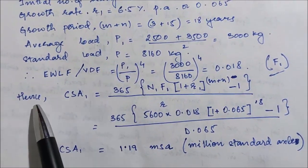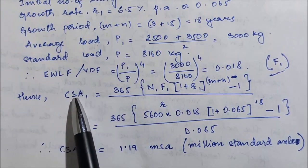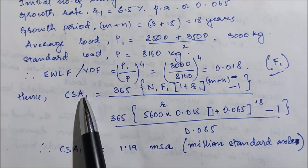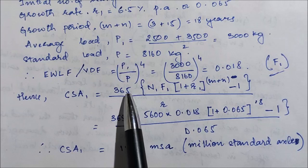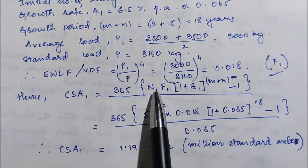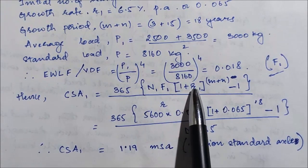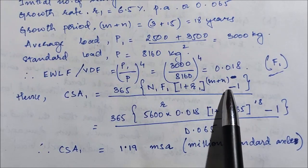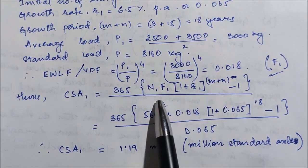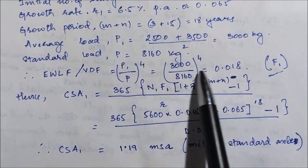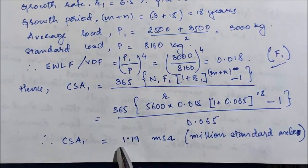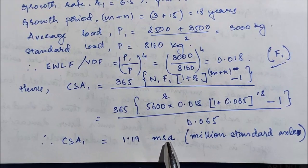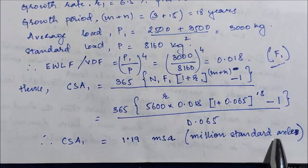Substituting all values into the CSA formula for class 1 — 365 into N1, F1, (1 + R1)^(m+n) − 1 divided by R1 — we get CSA1 equals 1.19 MSA, where MSA is million standard axles.